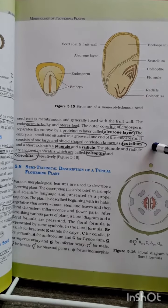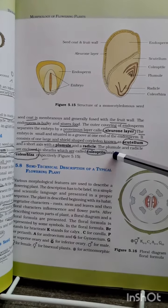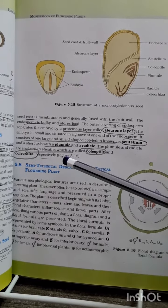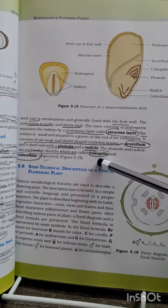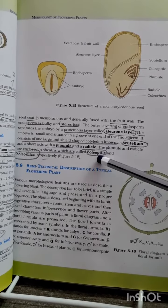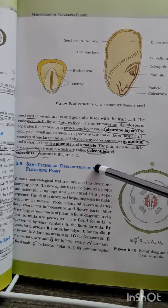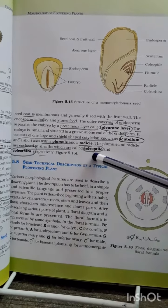There is a short axis with plumule and radicle. Here's a remembering hack: plumule and radicle are enclosed in sheaths called coleoptile and coleorhiza respectively. What I did to remember these terms: plumule has P in it so it's coleoptile, and radicle has R in it as the first letter so it's coleorhiza. You can remember it like this.